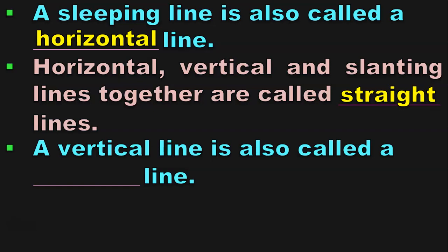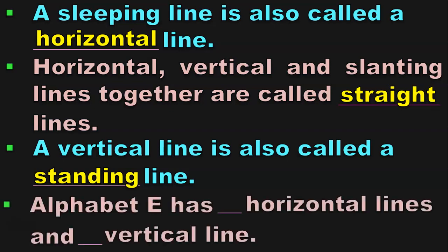A vertical line is also called a standing line. A sleeping line is called a horizontal line and a vertical line is called a standing line. Alphabet E has three horizontal lines and one vertical line. Let us move on to the next set of questions.